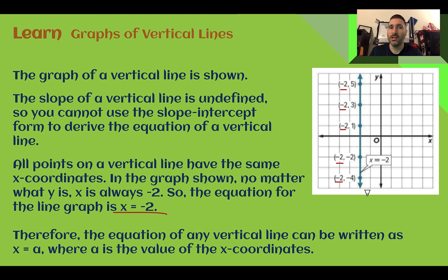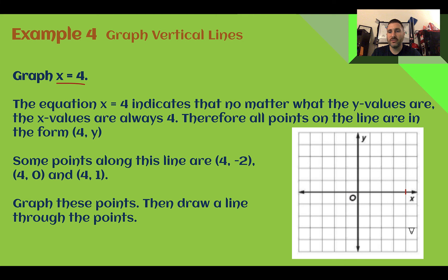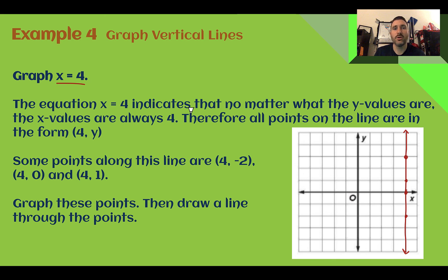Example 4: Graph vertical lines. Graph x equals four. I can tell right away just by looking at the equation — it is not in y equals mx plus b format. It's x equals a number, which means it's a vertical line. No matter what, the x-coordinate is going to be four. So I can plot four, negative two; four, zero; four, one; four, three — all of them have an x-coordinate of four. Then I'm going to draw my line with arrowheads to show that it goes on in both directions. So x equals four is a vertical line that went through the x-coordinate of four.